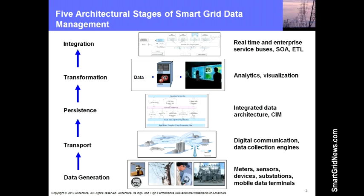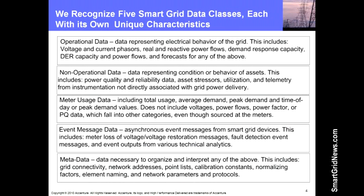We think about generation, then transport, and then persistence — which really means data storage. It opens up questions of how we're going to represent the data and how we should persist it for different kinds of applications. Then transformation: we use analytics and software tools to transform raw data into useful information so it can be comprehended, and we combine that with visualization for decision support. Finally, integration — connecting all this information to utility processes and systems to get real value out of it. Those five stages form our framework for putting together a data management solution for Smart Grid.